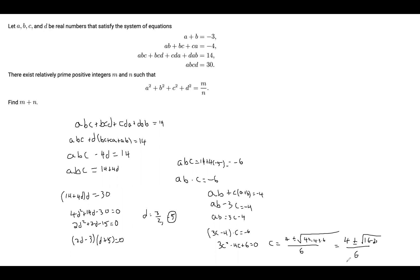This is not going to be real because 16 minus 72 is a negative number, and taking the square root of a negative number gives an imaginary result. But we specified at the beginning of the problem that a, b, c, and d are real numbers, which means there are no solutions for this case. So d cannot be negative 5.